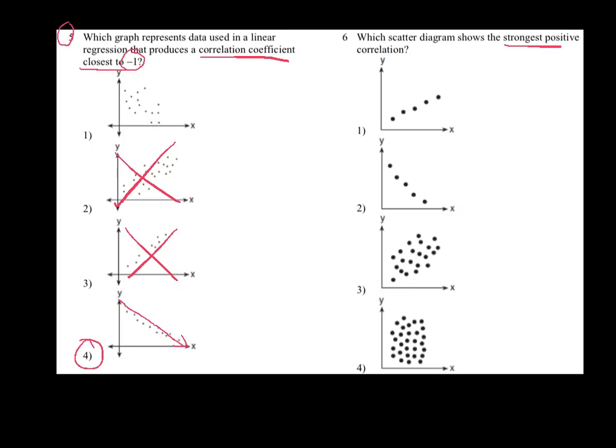And then last but not least, we're looking for the strongest positive correlation here, and it looks like this is the tightest pattern going uphill. So that's going to be my final choice there.